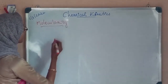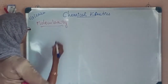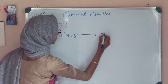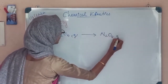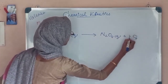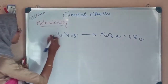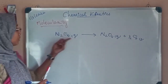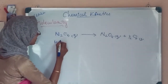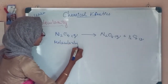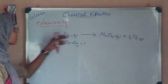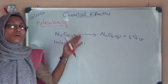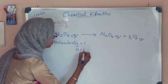Consider the dissociation of nitrogen pentoxide N2O5 in the gaseous state to give N2O4 in the gaseous state and oxygen. Here the number of molecules of N2O5 involved in the reaction is equal to 1, so the molecularity is equal to 1. This is a simple reaction, and from experiment it is found that the order of the reaction is also equal to 1.